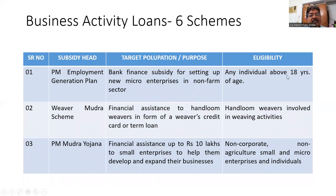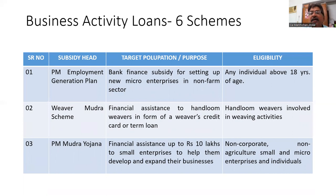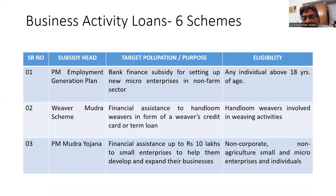Another scheme is the PM Employment Generation Plan. It provides bank finance and subsidy for setting up new micro-enterprises in the non-farm sector. The eligibility is that any individual above 18 years of age is eligible to set up a micro-enterprise for their livelihood or to increase their standard of living.